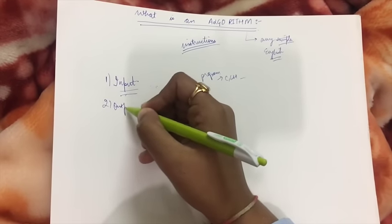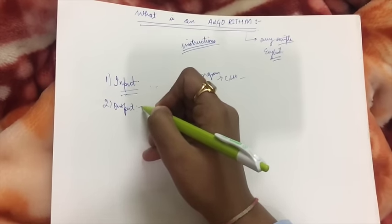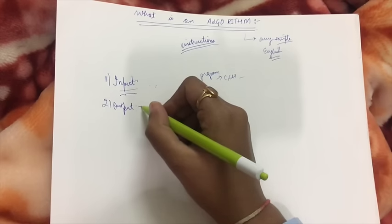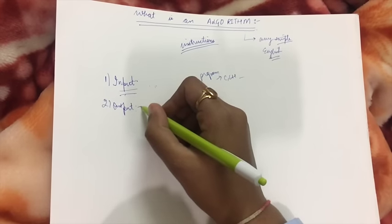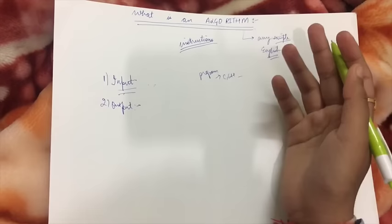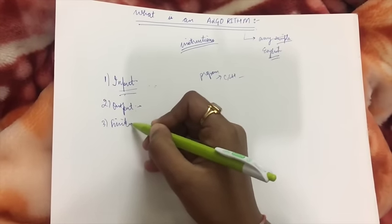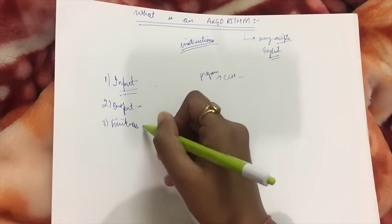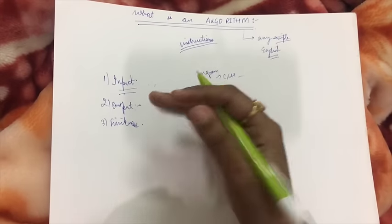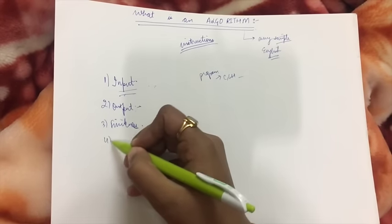The second criteria is output. An algorithm must produce at least one output. The algorithm that does not produce any answer or output is useless. The third is finiteness. Finiteness means that the algorithm must have an ending; it should not keep on running in an infinite way.